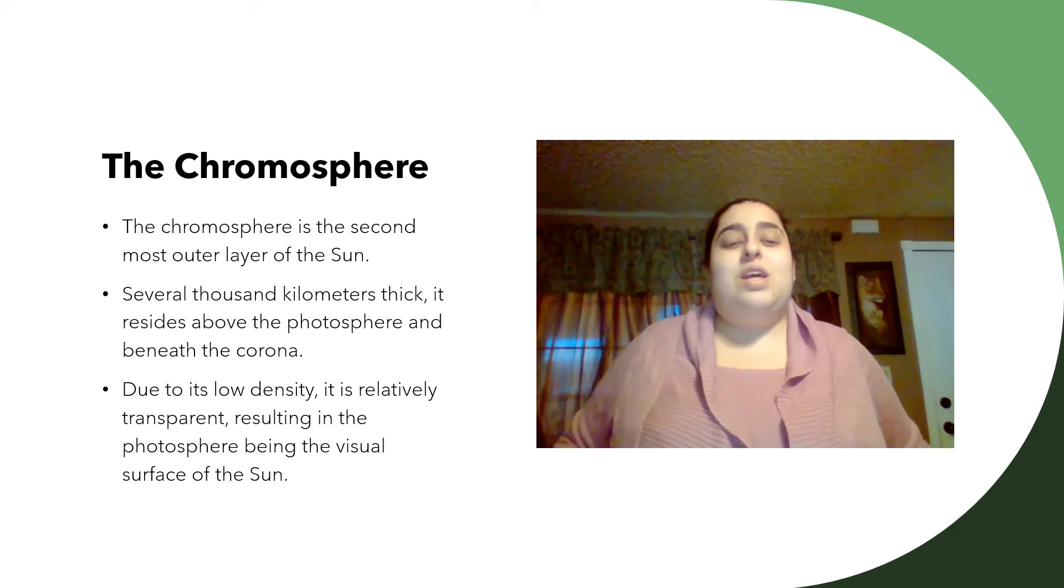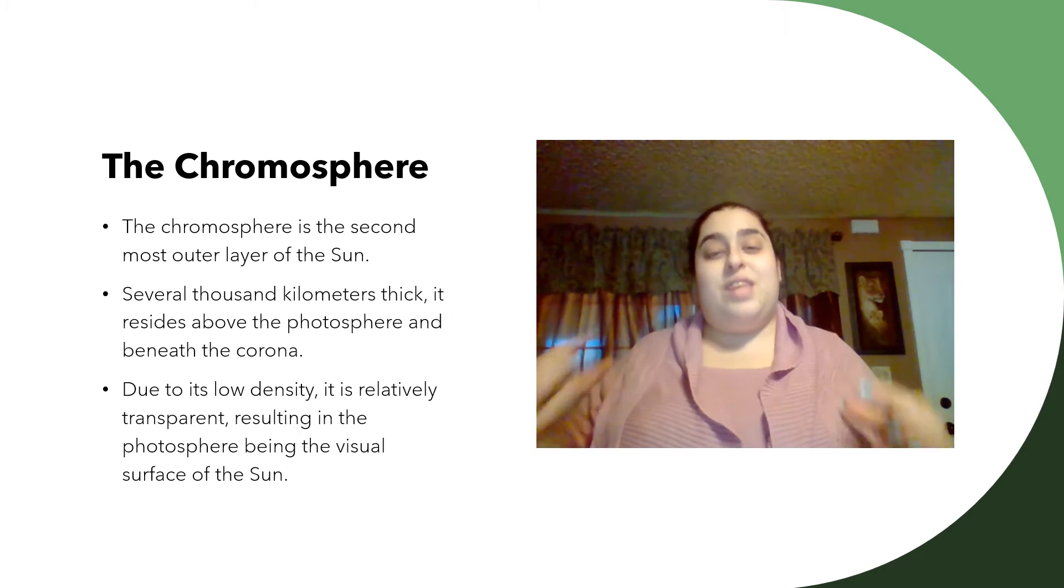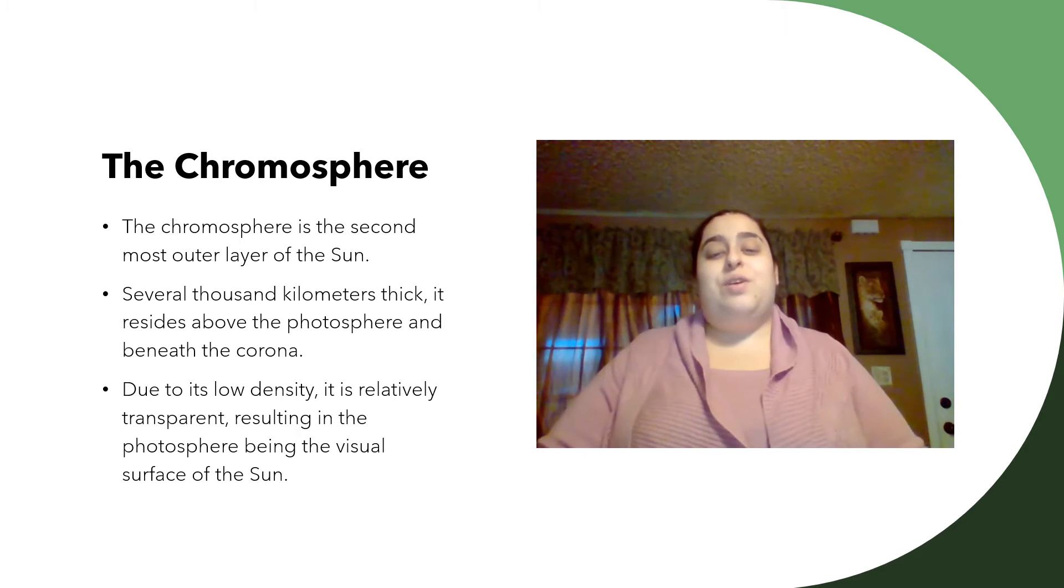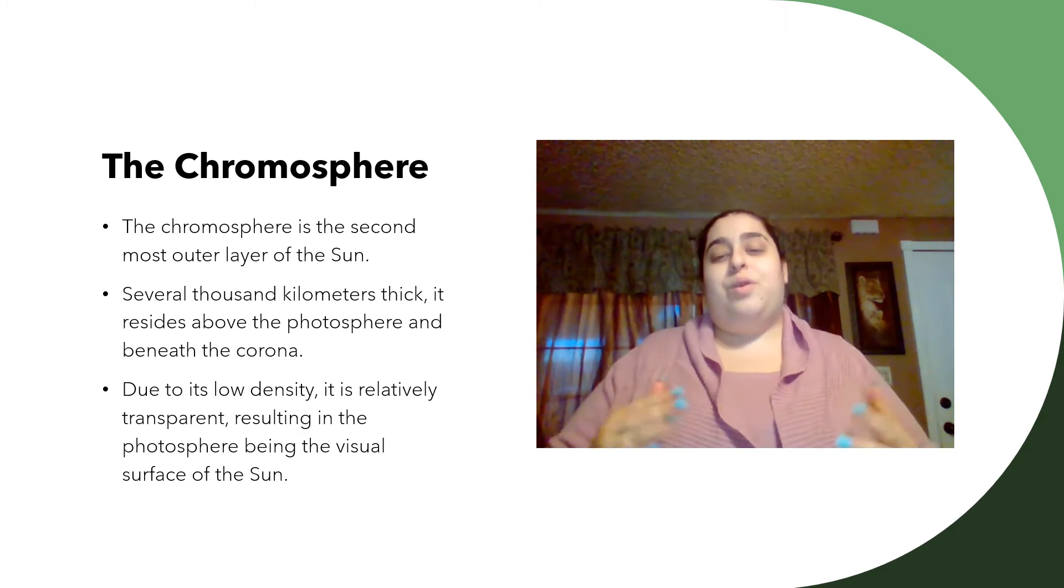The next one is the chromosphere. This is the second most outer layer of the sun. It spans thousands of kilometers in thickness. It is right beneath our photosphere and it is right above the corona.